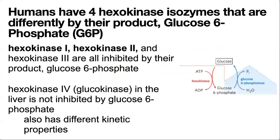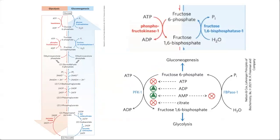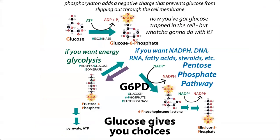The next step to regulate is the committed step: fructose 6-phosphate to fructose 1,6-bisphosphate. In glycolysis this is carried out by phosphofructokinase 1 (PFK1), and the reverse in gluconeogenesis uses fructose 1,6-bisphosphatase 1 (FBPase1). These are highly and reciprocally regulated. Why so highly regulated? Because this is the committed step of glycolysis. Glucose trapped inside cells can go many directions — one major alternative is the pentose phosphate pathway, used to make NADPH, DNA, RNA, fatty acids, steroids, and more. But once we commit to glycolysis, those alternatives are no longer accessible.